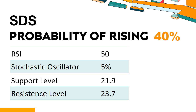SDS's short-term resistance level is 23.4. If it breaks through 23.4 during the session, it will look up to 23.7.